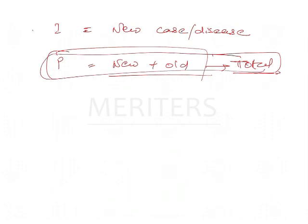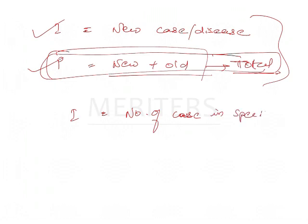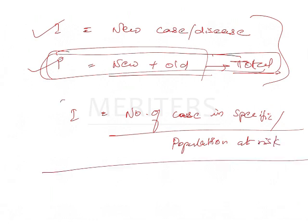So there is some formula for calculating these. The proper formula is number of new cases in specific time, whether it can be month or year or anything, divided by population at risk. This is the formula for incidence. It can be per hundred or thousand or ten thousand, depending on how much of a population we are taking.